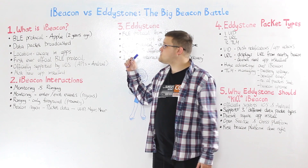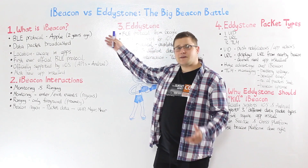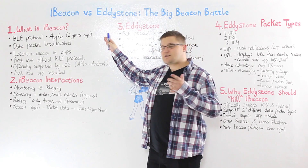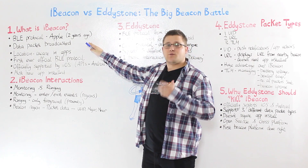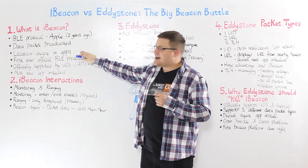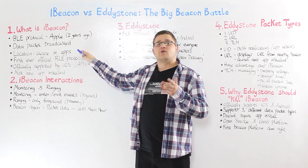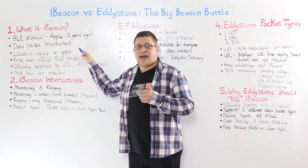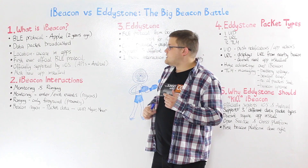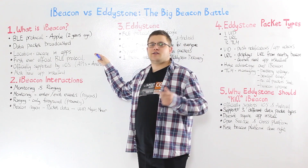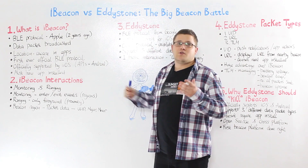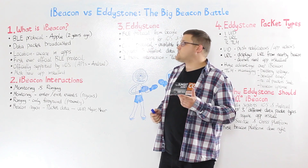What is an iBeacon? An iBeacon is a Bluetooth Low Energy protocol that was created by Apple and was released two years ago. It allows developers to create location-aware apps thanks to beacons. It is the first official Bluetooth Low Energy protocol, so almost every beacon supports it.